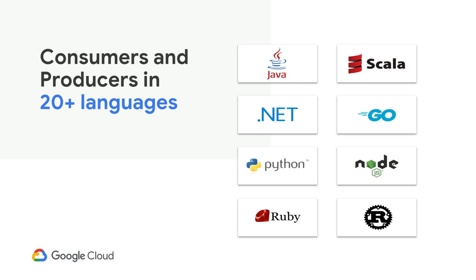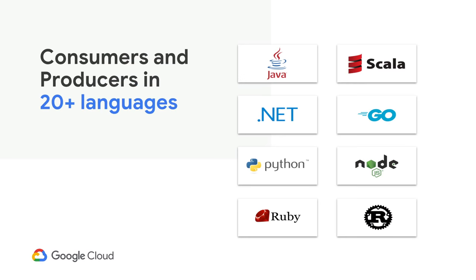If you go to the Apache Kafka project, you get clients in Java and Scala. But Kafka has a binary protocol, so a lot of people started implementing it in different languages — you have a pretty big ecosystem. If your language is not supported, there's a REST proxy that will give support. Pretty much everyone does REST. Being able to support a wide array of languages means you can take whatever knowledge you have today and take advantage of the REST proxy.